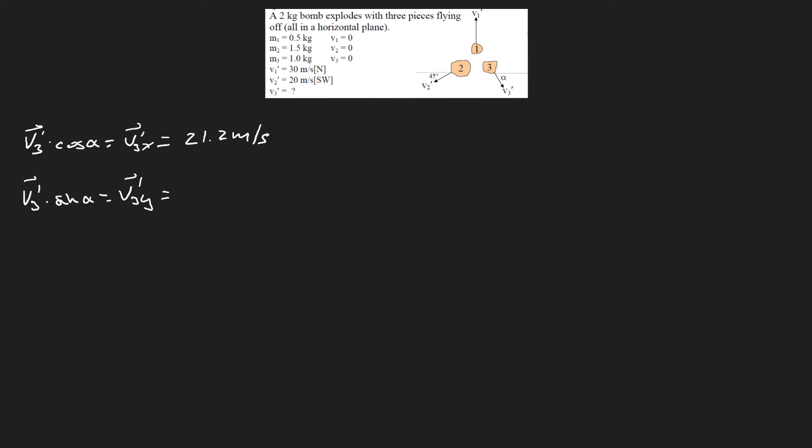We also had v3 prime sine alpha, which is v3y prime, equal to negative 6.2 meters per second. If you have the x and the y portion of a triangle, then you can solve for tan, because we know that tan is opposite over adjacent.